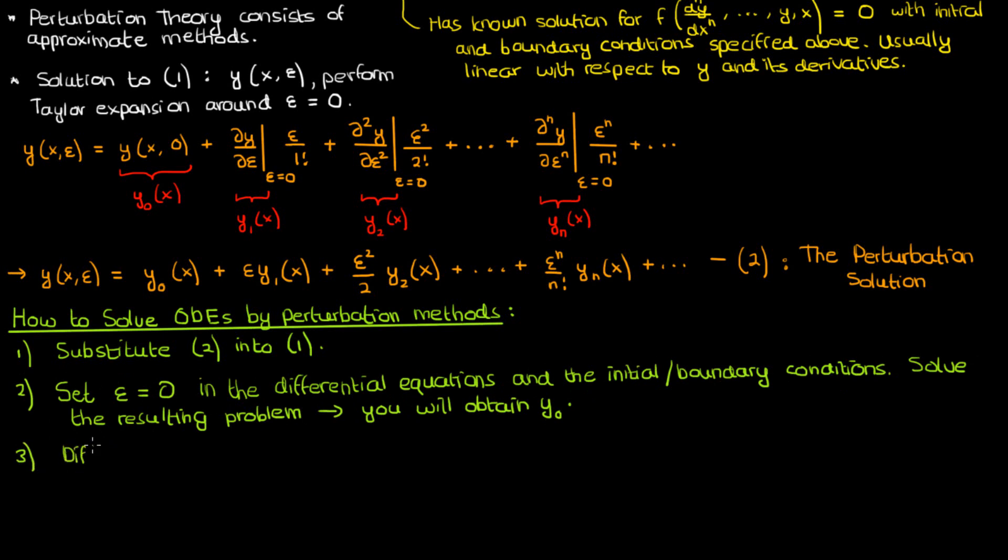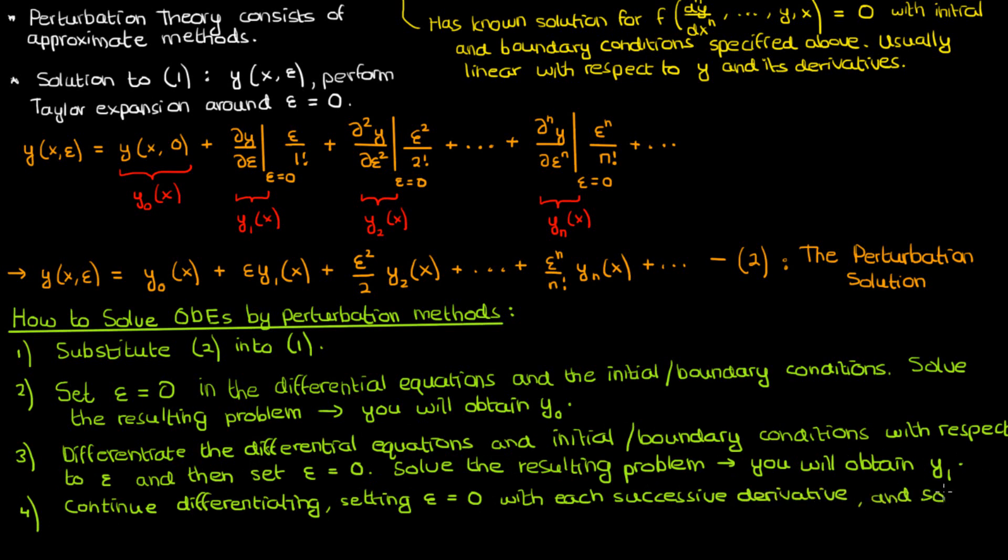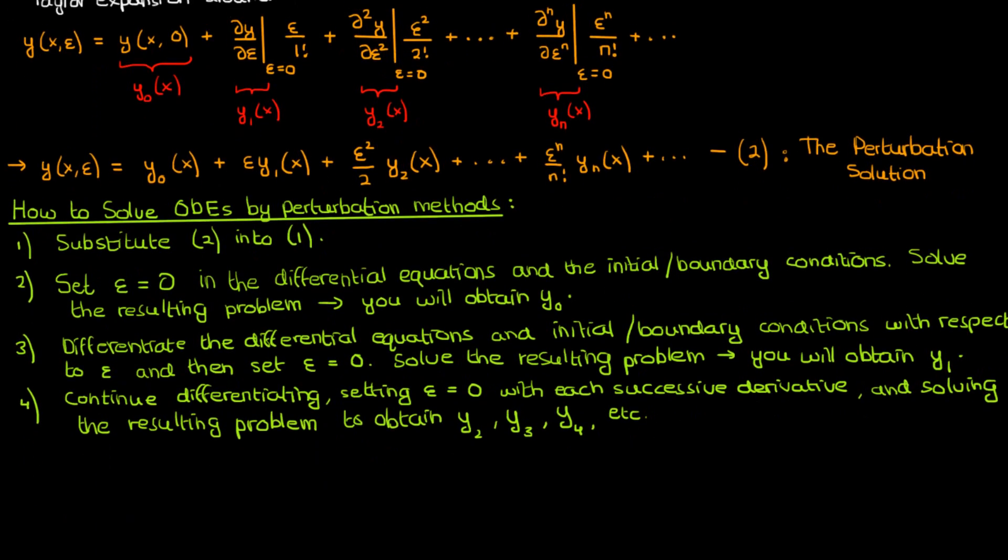The third step is to differentiate once, both the differential equation and the initial slash boundary conditions, with respect to epsilon. Once you do that, set epsilon equal to 0, and solve the problem. You will now end up with the solution, y1. The fourth step is to continue differentiating, setting epsilon equal to 0 with each successive derivative, and solving the resulting initial value or boundary value problem. As you do that, you'll get y2, y3, y4, and so on, a better and better approximation of the perturbed solution.